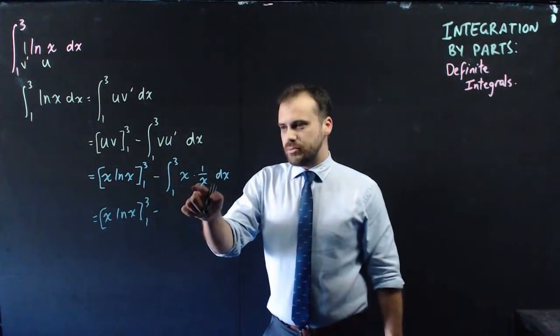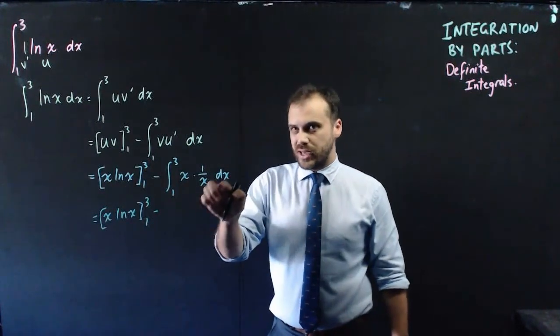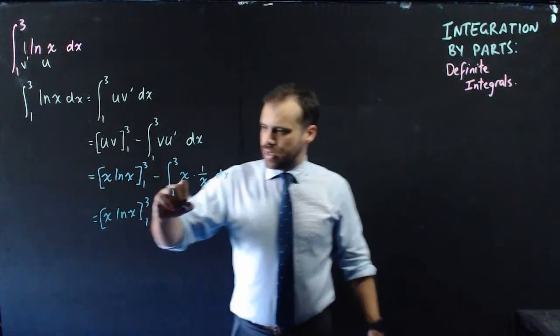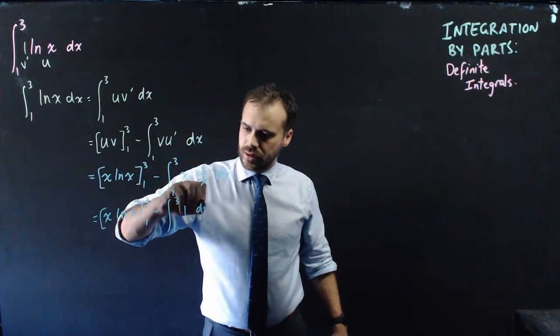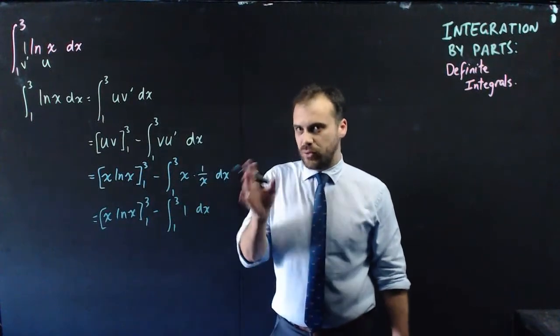Just looking here, that's going to be x times 1 over x which is going to be 1. So I'm finding the integral between 3 and 1 of the number 1.